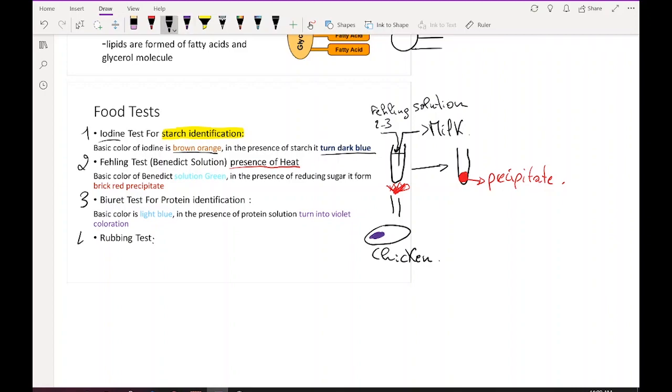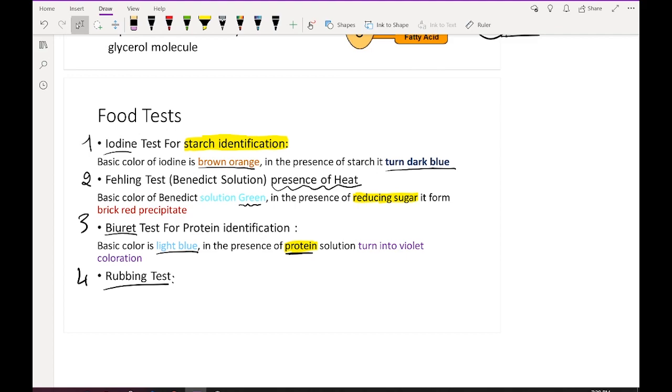Rubbing test is the last test. If we put drops of oil on a piece of paper, it turns into a transparent or translucent spot. For example, when we use paper napkins with food, after a while the paper shows transparent spots. This confirms the food contains fat. Now let's watch a video to see how each test produces these color changes.